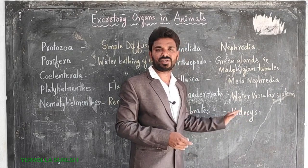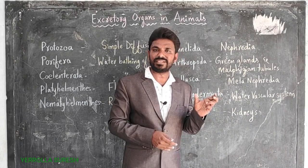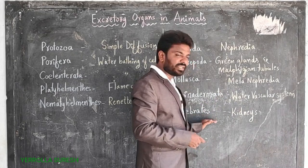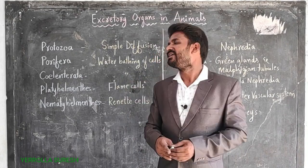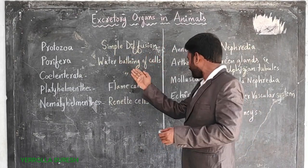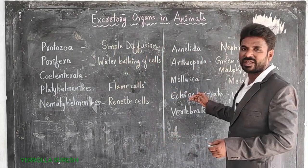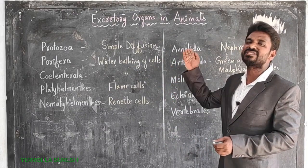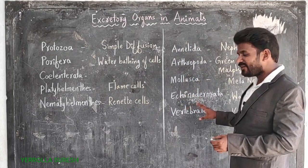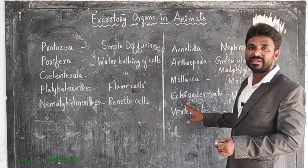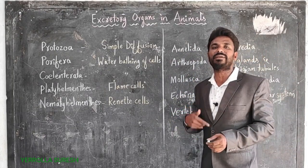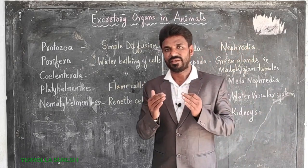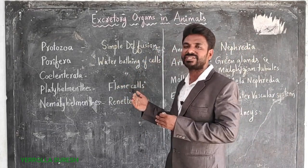Next is Echinodermata; starfish is the best example. In Echinodermata, the excretory system is the water vascular system. Finally, vertebrates — all organisms having a spinal cord are vertebrates. In all vertebrates, kidneys are the excretory organs. Through kidneys, they eliminate waste material. So from Protozoa to Echinodermata, many variations are found in excretory organs, but all vertebrates have developed kidneys.